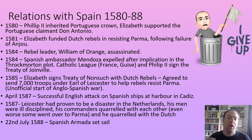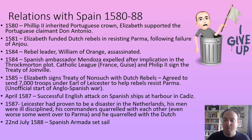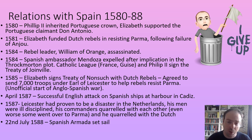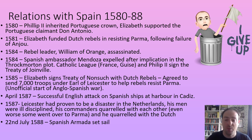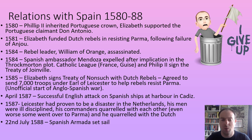This led to the Treaty of Nonsuch, signed with the Dutch rebels in 1585, in which Elizabeth agreed to send troops headed by her favourite the Earl of Leicester, Robert Dudley, to help resist Parma. Unofficially, this was the start of the Anglo-Spanish war. You can argue Elizabeth played a key role in starting it, though there had been huge Spanish provocation — whether the blame lies more with Spain or Elizabeth is a matter of judgment.